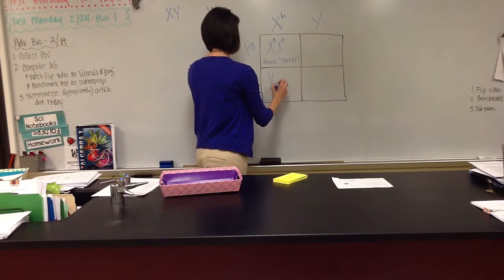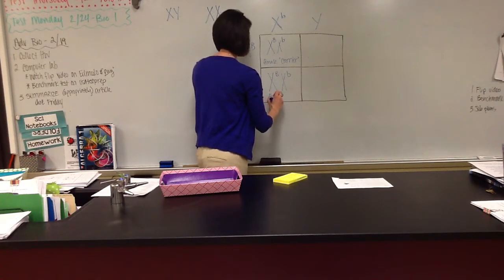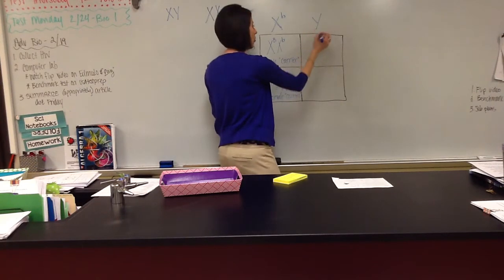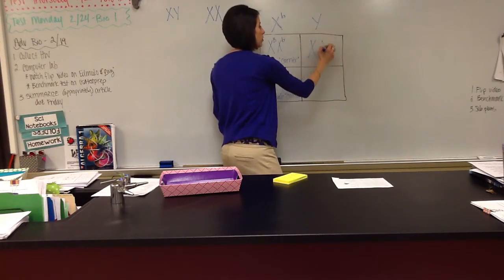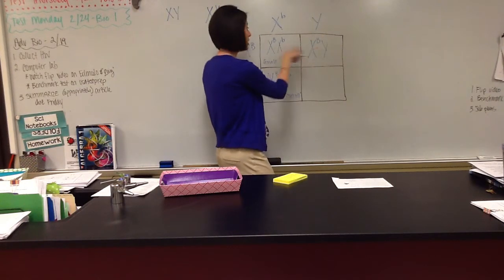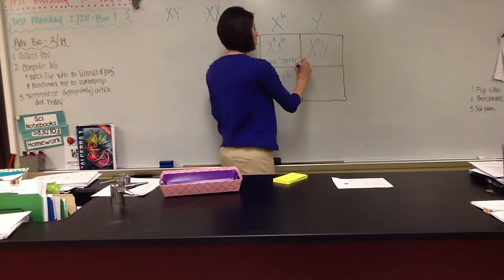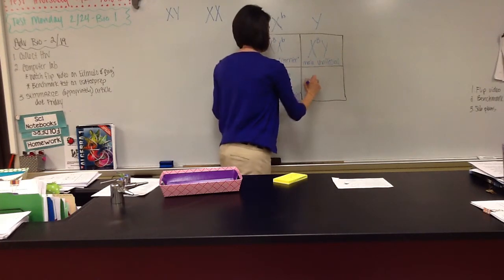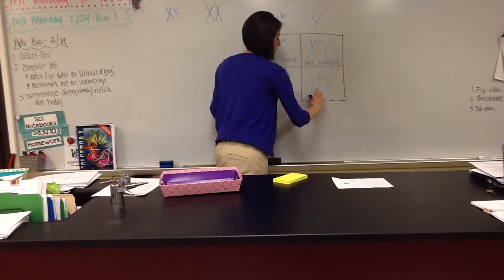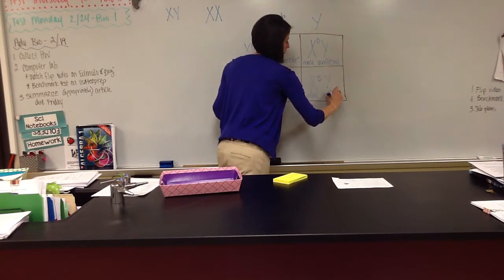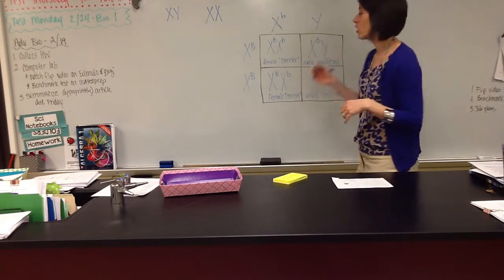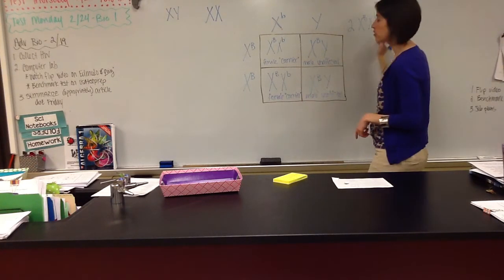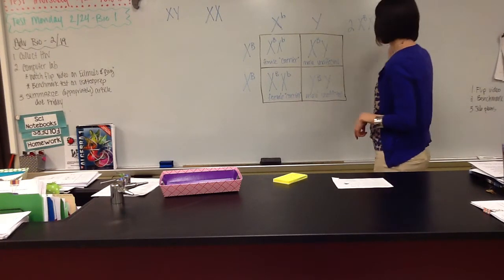I'm going to do this one. She's also female carrier. This one's going to be a boy because he gets my X chromosome and Tim's Y chromosome. And since I'm passing on the dominant trait, he won't be colorblind. So male unaffected. And this one's also going to be male unaffected. So a genotypic ratio would look like we have two offspring that are female carriers to two offspring that are male unaffected.